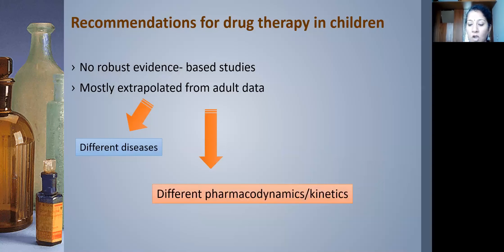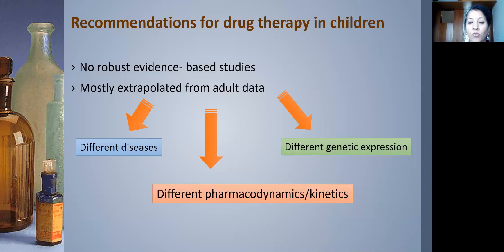A child is not the same as a mini adult, so we can have difficulty in dosing these children. The other problem is that children have a different genetic expression — for example, the receptors for beta blockers may be different in pediatric versus adult patients — leading to suboptimal recommendations for pediatric drug therapy.